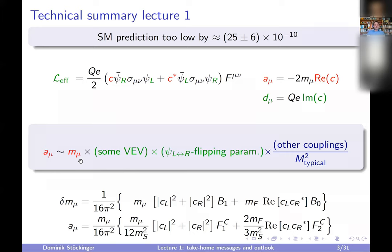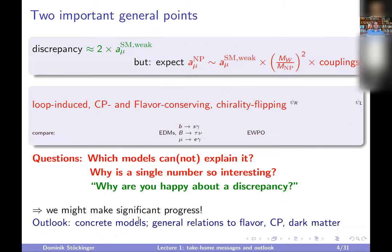You have one factor of the muon mass always from the definition — this has no dynamical origin. Then you have the green factors which come from the fact that g-2 is a chirality flipping quantity, which also breaks electroweak gauge invariance. For this reason, in any theory, any contribution must be proportional to some vacuum expectation value which breaks electroweak gauge invariance, and some chirality flipping parameter coming from the theory, plus couplings and mass square suppression.